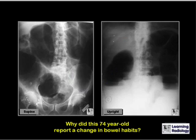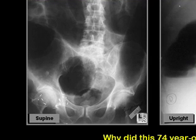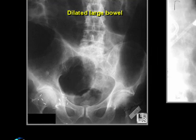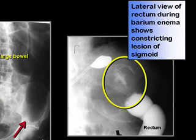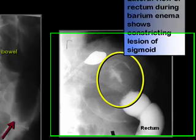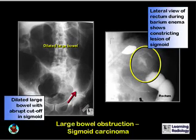This is Diagnosis 14. Why did this 74-year-old report a change in bowel habits? On supine and upright views of the abdomen, the dilated bowel is large bowel with an abrupt cutoff in the air column in the distal descending colon. On the lateral view of a barium enema, there is an obstructing annular constricting lesion representing a sigmoid carcinoma producing a proximal large bowel obstruction.